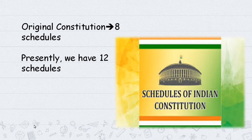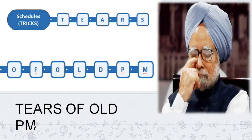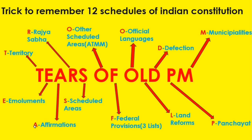We have 12 schedules in the Constitution. The last schedule added was the 12th in 1992. To remember all 12 schedules, we use a mnemonic: 'TEARS OF ALL PM' - referencing former Prime Minister Manmohan Singh. This trick helps remember all the schedule areas.